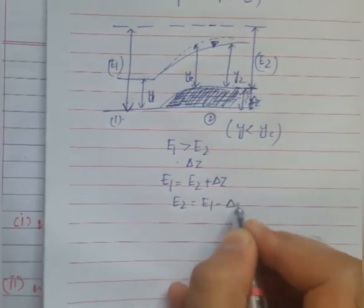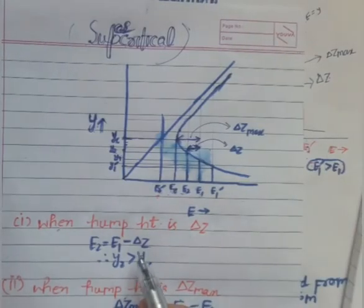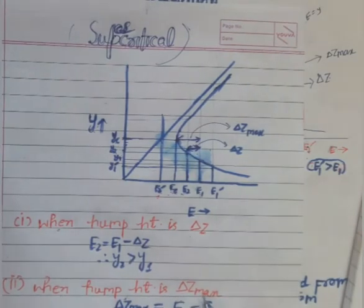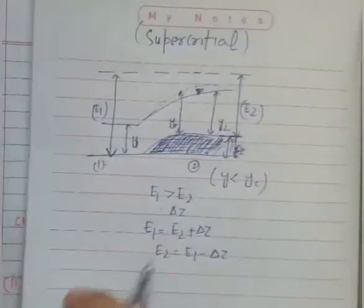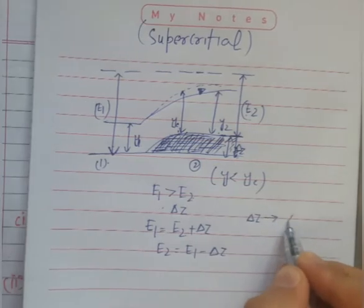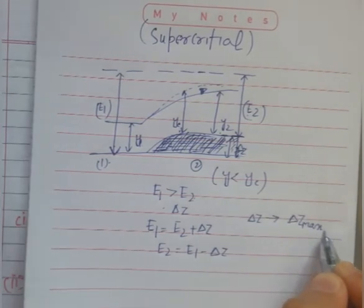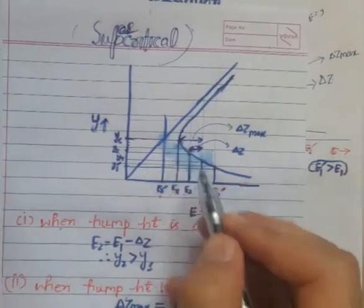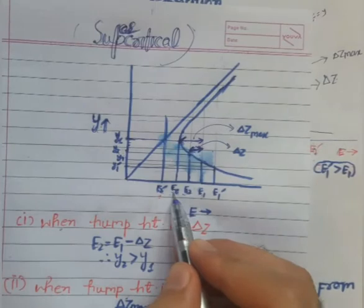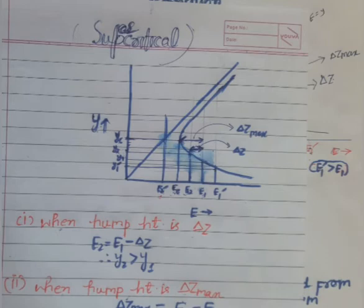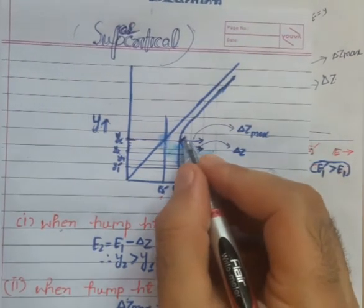From this we conclude e2 = e1 − ΔZ. Case 2: When the hump height increases to ΔZ_max, e2 shifts to ec — the critical specific energy at section 2. So ΔZ becomes ΔZ_max and e2 equals ec.